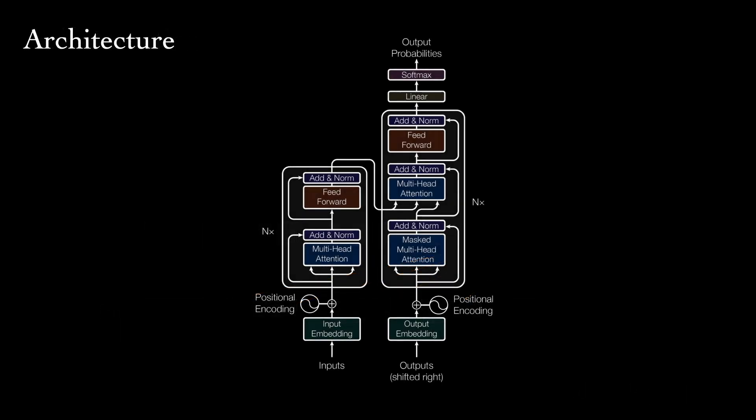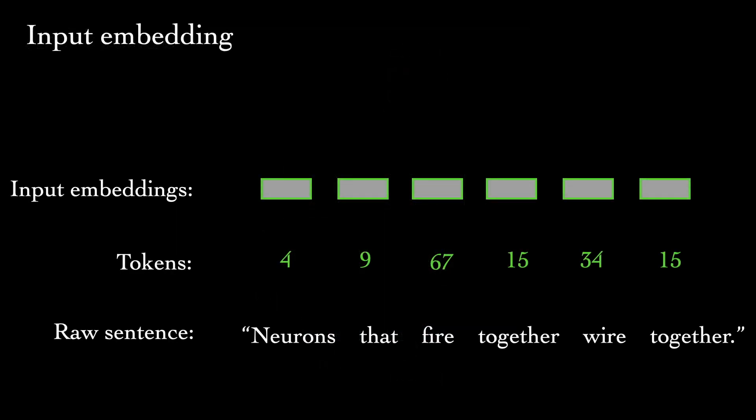The attention mechanism is going to allow each representation to differentially consider the representations in every other position, and the communication paths will have the same length for all pairs of elements. Let's first walk through the encoder and learn how each component works. Using language as an example domain, we start with some raw input sentence, and our vocabulary maps each word to a unique integer. These integer tokens are passed through an embedding layer, a simple lookup table that pairs each integer with a learned continuous vector.